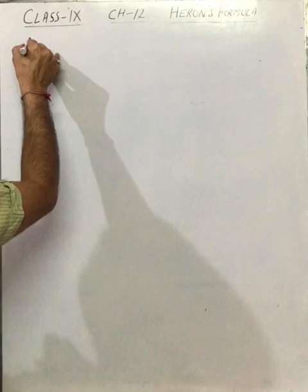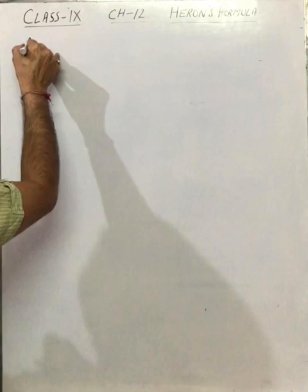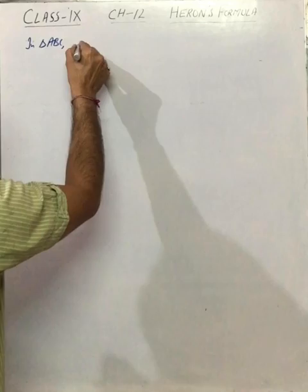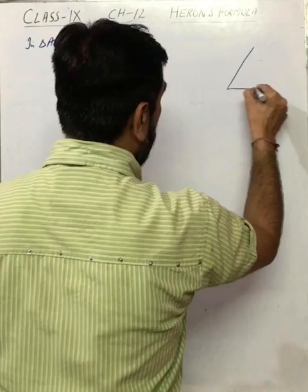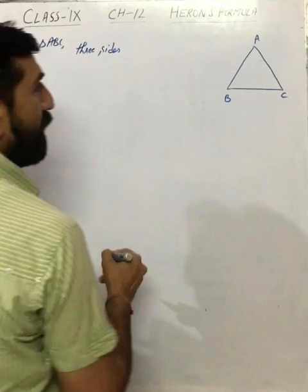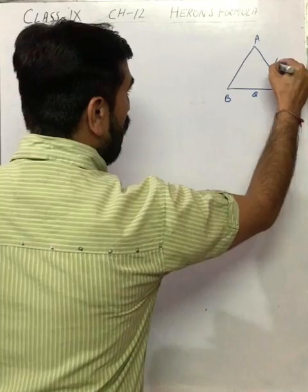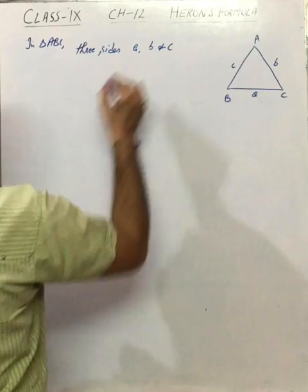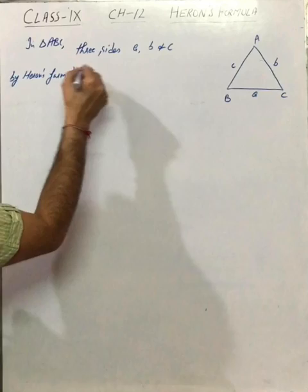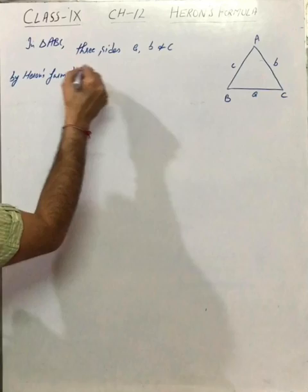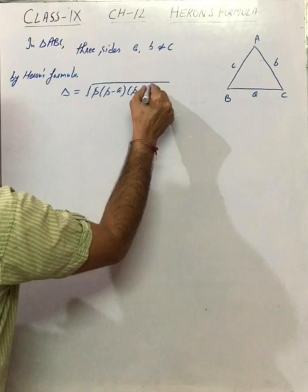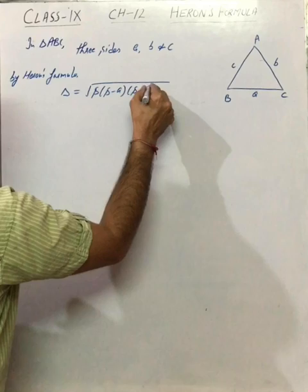Suppose you are given a triangle ABC in which three sides are given. So I will give A to the opposite side, B to the opposite side, C to the opposite side. These are the three sides and we need to find its area. So by Heron's formula, its area will be square root of S into S minus A, S minus B, S minus C. This is Heron's formula.